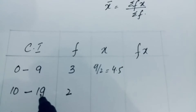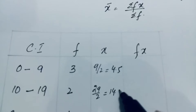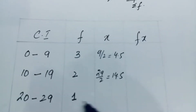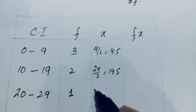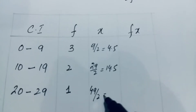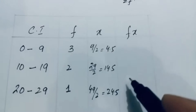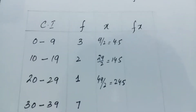For the next class, 10 plus 19 equals 29, divided by 2 gives 14.5. Then 20 plus 29 equals 49, divided by 2 gives 24.5. You will calculate the rest of the midpoints similarly.